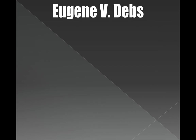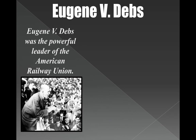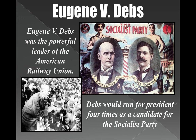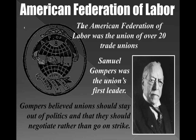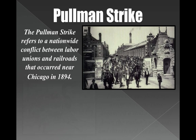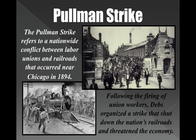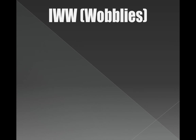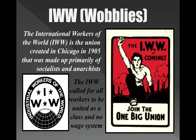Obviously there are still unions today, so this anti-union sentiment didn't last forever. Another great union leader was Eugene Debs, leader of the American Railway Union, who actually ran for president four times. The American Federation of Labor was founded by Samuel Gompers, who believed unions should stay out of politics and negotiate rather than strike. Another major strike was the Pullman Strike — a nationwide railroad strike that shut down the nation's railroad system, threatened the economy, and made people realize unions had real power. The IWW, or the Wobblies, stands for International Workers of the World — they had a bad reputation for calling for classes to unite and revolt against the world.